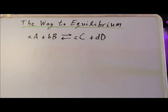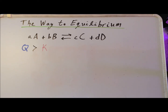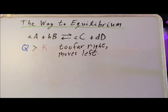The reaction quotient Q is useful because if we compare it to the value for the equilibrium constant, it will tell us where we are relative to equilibrium. Suppose that when we evaluate the reaction quotient Q, it has a value greater than the equilibrium constant. This tells us that we have a greater concentration of products and a smaller concentration of reactants than we would at equilibrium. So effectively we have moved too far to the right, and the system will respond by moving towards equilibrium, which is going to be moving towards the left.